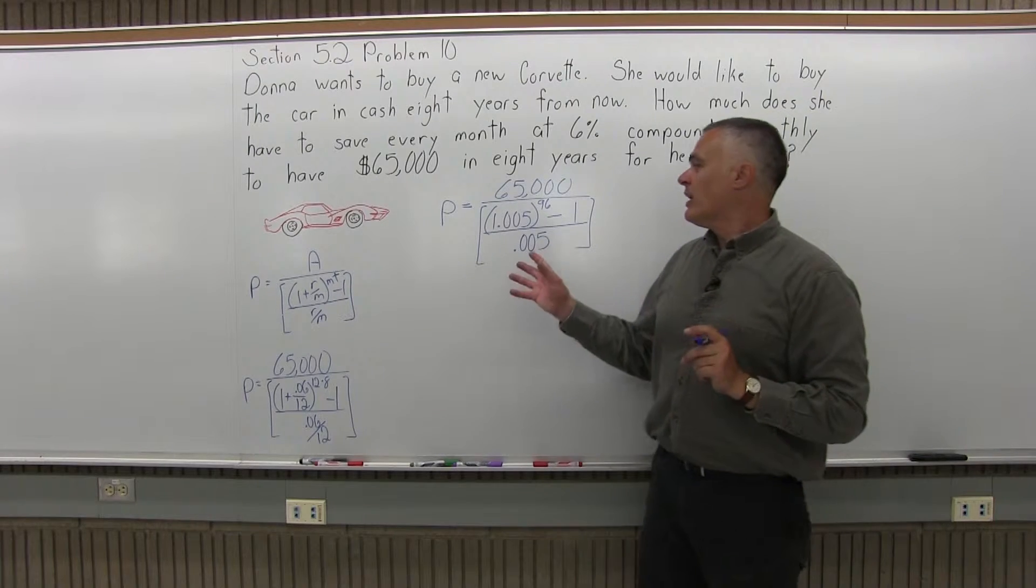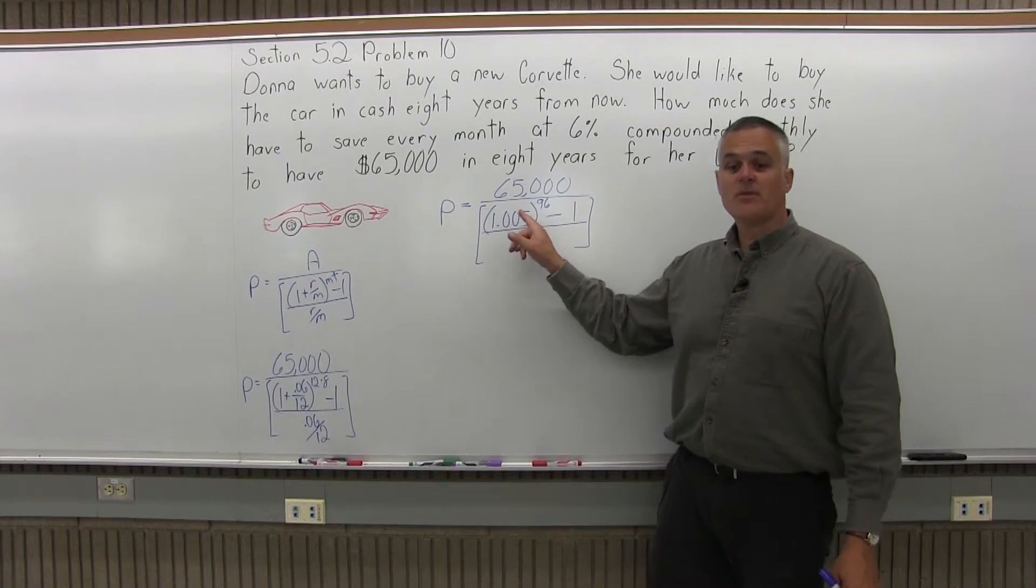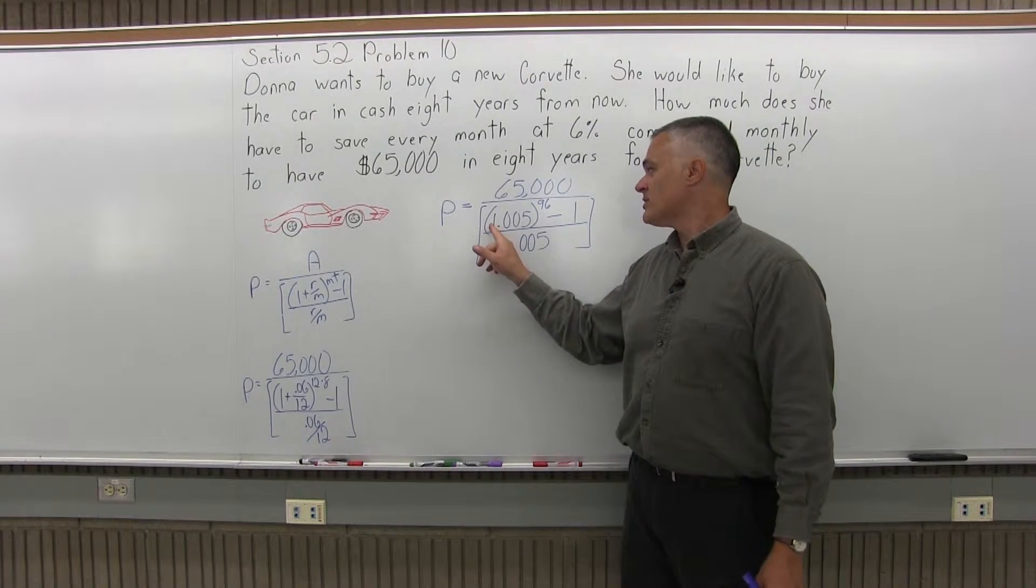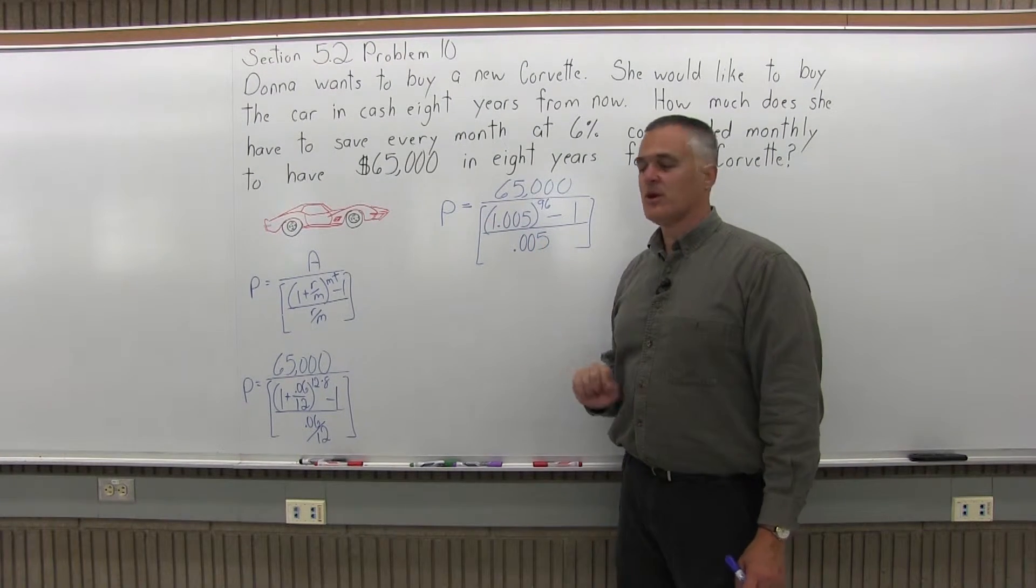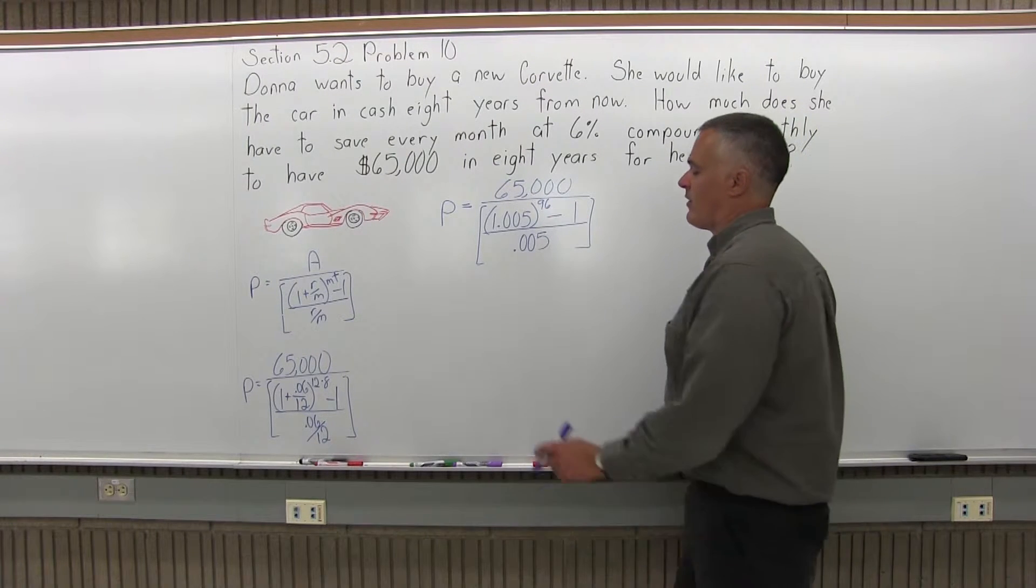And I usually point out at this stage in the formula you're going to have the same decimal in the numerator and in the denominator of your brackets. In the numerator there's a 1 in front of the decimal, in the denominator there is not. So the next part of the process I'm going to do that 96th power.